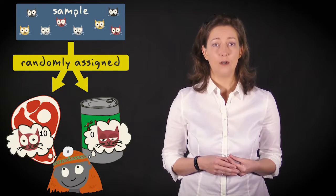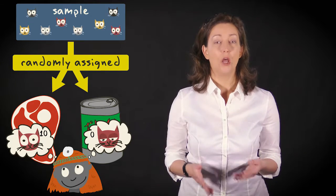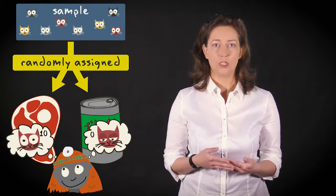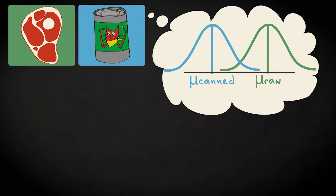After two months, a veterinarian determines the cat's health by analyzing blood work and stool samples, resulting in a health rating between zero and ten. If diet is related to health, the two groups will come from distinct populations, one with a higher mean health value than the other.